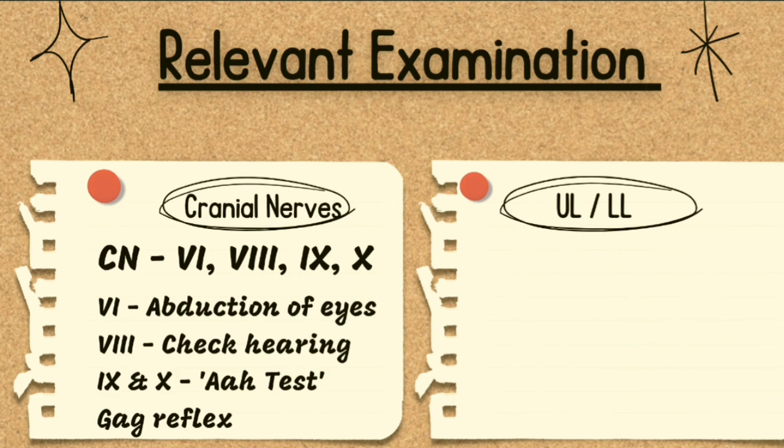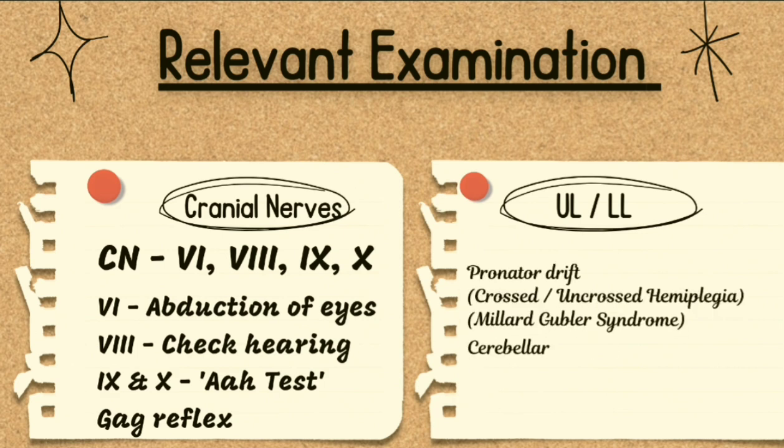For the 9th and 10th cranial nerves, perform an 'ah' test: ask the patient to open the mouth, shine a torch inside, ask the patient to say 'ah,' and check the movement of the palate. Gag reflex is not recommended in the exam.